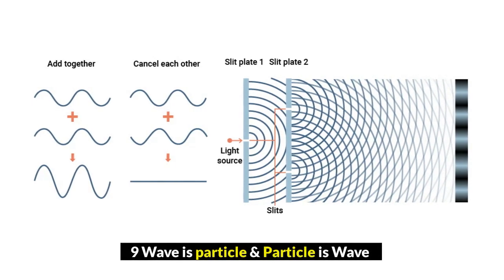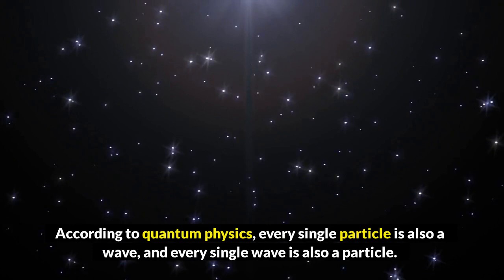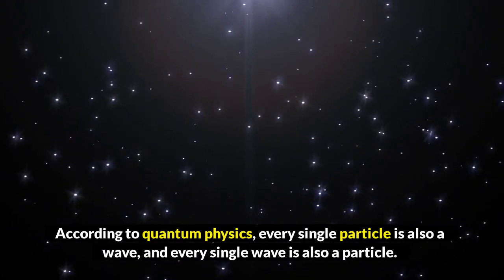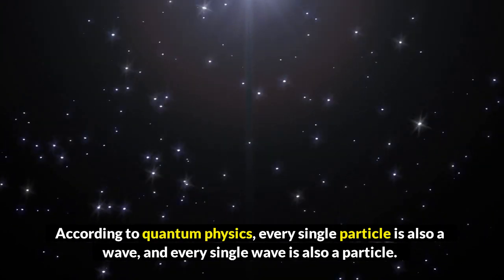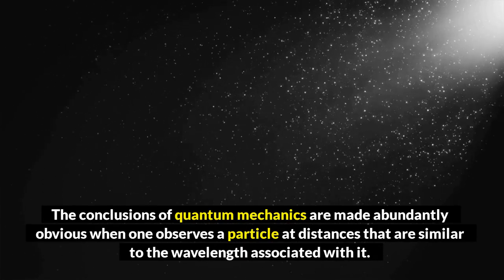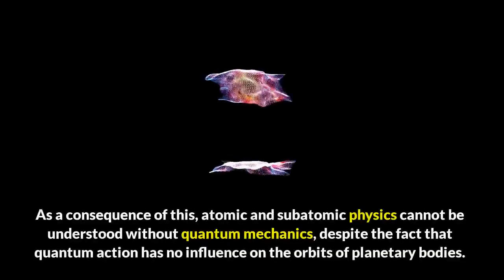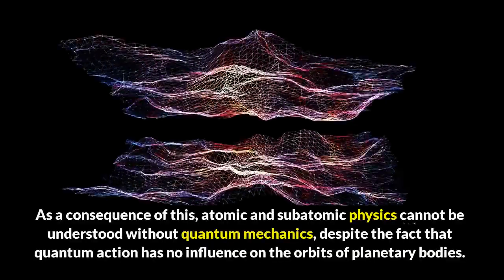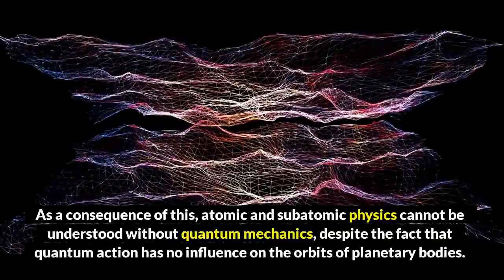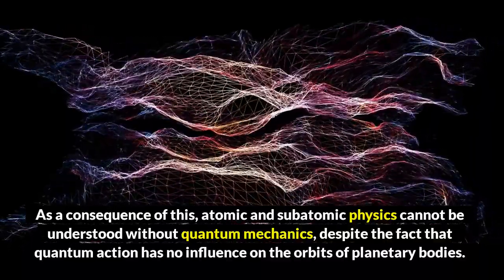9. Wave is particle and particle is wave. According to quantum physics, every single particle is also a wave, and every single wave is also a particle. The conclusions of quantum mechanics are made abundantly obvious when one observes a particle at distances that are similar to the wavelength associated with it. As a consequence of this, atomic and subatomic physics cannot be understood without quantum mechanics, despite the fact that quantum action has no influence on the orbits of planetary bodies.